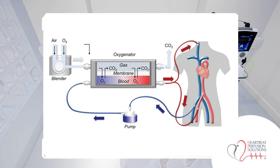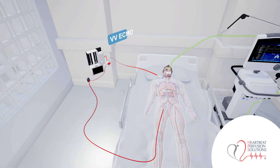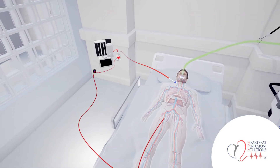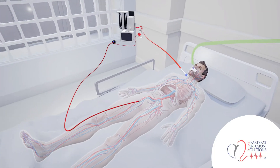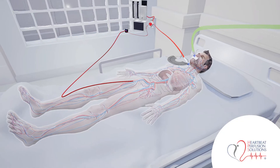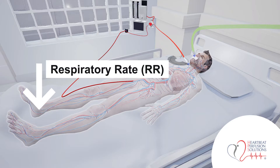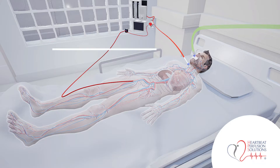Ventilator settings for the native lungs, also known as VV ECMO. Respiratory rate, or RR: the respiratory rate may be adjusted to allow the native lungs some degree of rest. The ECMO circuit assists with oxygenation and carbon dioxide removal, so the respiratory rate may be set at a lower than typical ventilator setting.